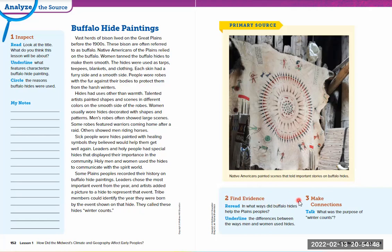Re-read to find which ways buffalo hides helped the plains people. Underline the differences between how men and women used hides. Think about why they named them winter counts — why would you want to label a year by an important event? Can you think of something that happened this year or last year, like COVID, that if someone came five years from now and you told them that event instead of the year number, that information would still be important? Write your thoughts in the notes section.